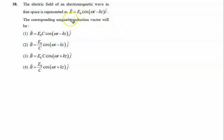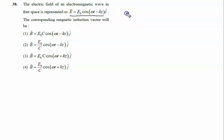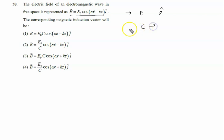The electric field of an electromagnetic wave in free space is given by E = E₀ cos(ωt - kz) î. From this equation, the electric field is along the î direction, and the wave is propagating along the z-axis, as indicated by the term (ωt - kz), so the propagation direction is k̂.